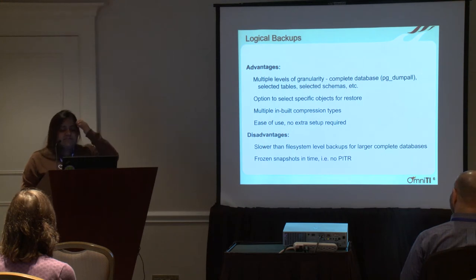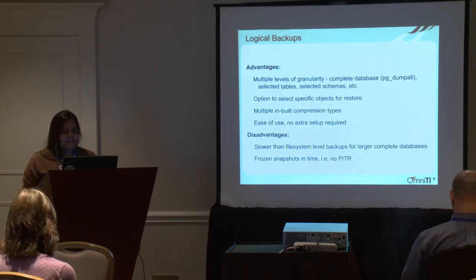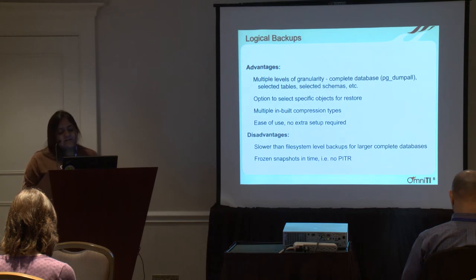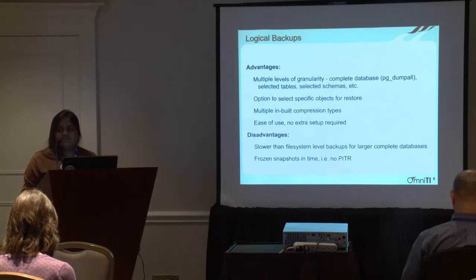pgrestore has an option that lets you list out the specific objects you want to restore from a backup file. Even if you've taken a backup of an entire schema, you can specify which table to restore — but that's only possible when you tell pgdump to compress your backups. Multiple built-in compression types are available. There's no extra setup required; it comes with the core installation of Postgres. I'm sure most of you already use it, but if you don't, you should look into it.